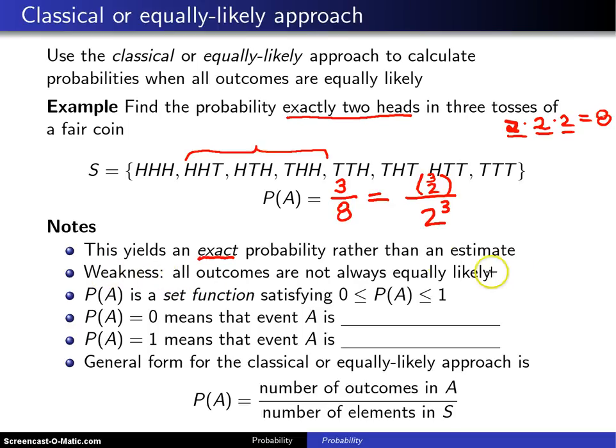Second of all, there is a weakness. You are going to hit probability problems where everything is not equally likely, and that's why we need still another approach, a fourth approach.